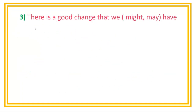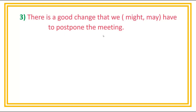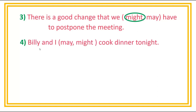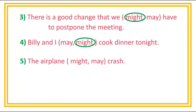Number 3: There is a good chance that we might/may have to postpone the meeting. Answer is might. Number 4: Billy and I may/might cook dinner tonight. Answer is might.